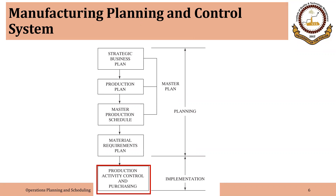One of the important components of production activity control or shop floor control is operation scheduling — which operations will be performed when and on which machine. In the last two lectures, we discussed this for jobbing and batch production. Today, we will discuss it for assembly line. Most concepts overlap, but some are specific to the type of process: some to jobbing, some to batch, and some to the assembly line process.